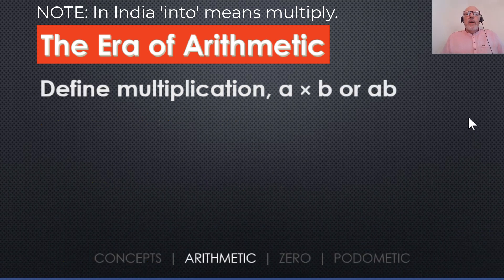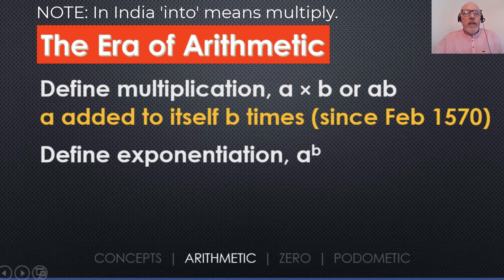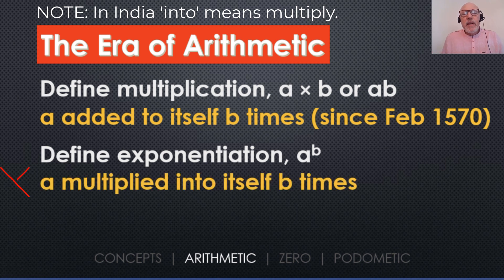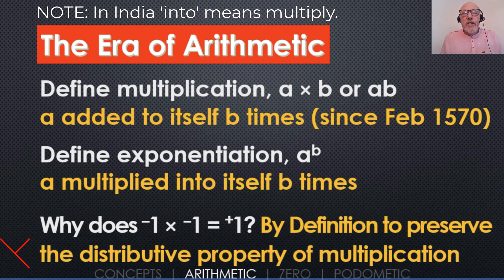If we look at the definition of multiplication — a into b — that's been defined as a added to itself b times since February 1570. And if we say what's the definition of exponentiation, a to the power of b, that's been defined as a multiplied into itself b times. And if we ask why does negative one into negative one equal positive one, the standard response from Western pedagogy is that it's by definition, to preserve the distributive property of multiplication.